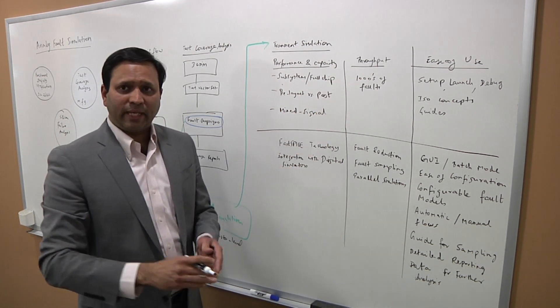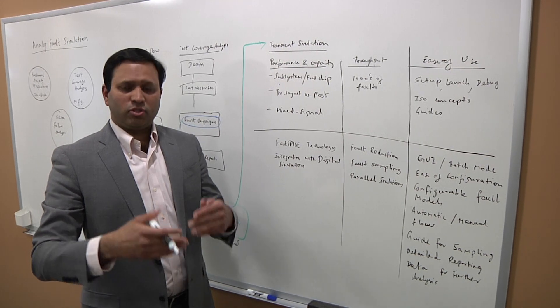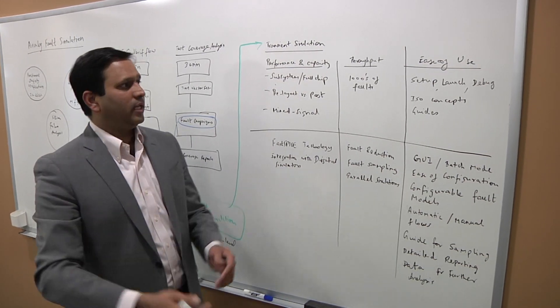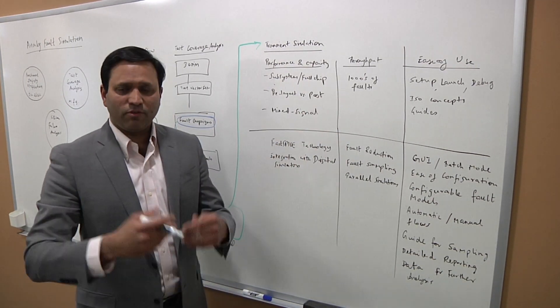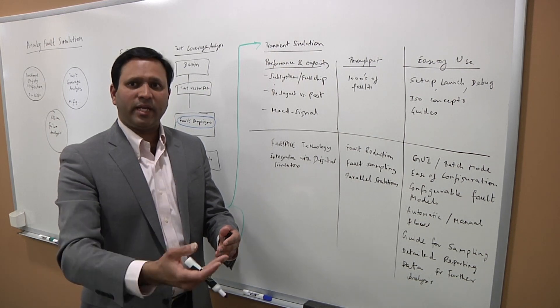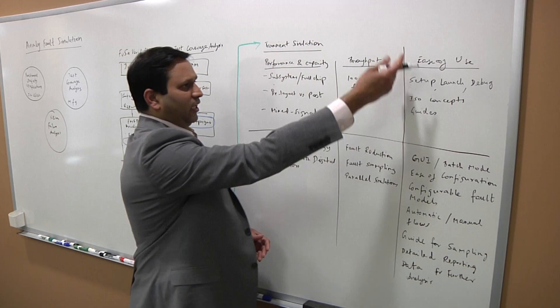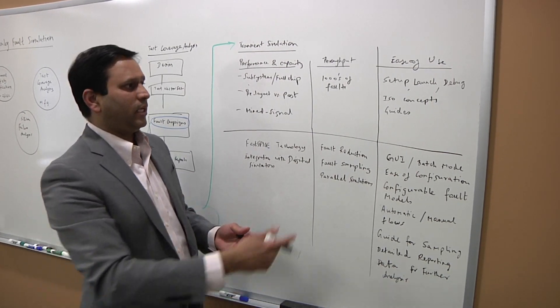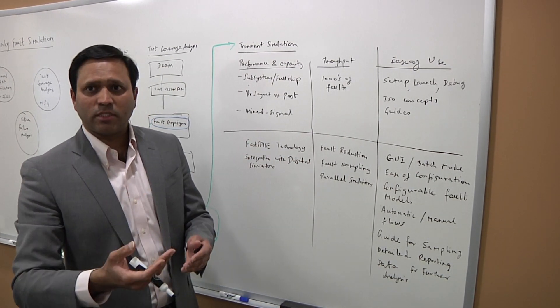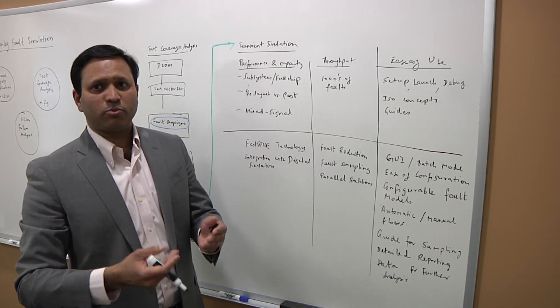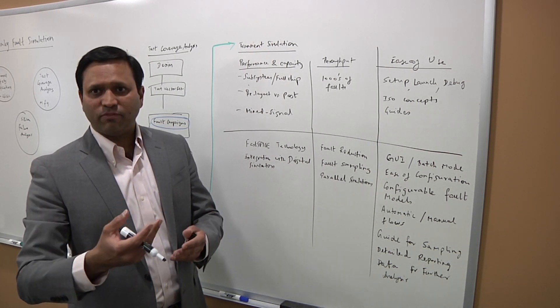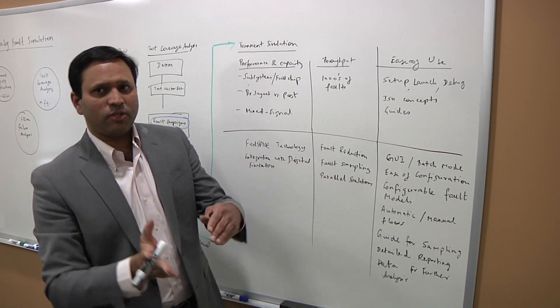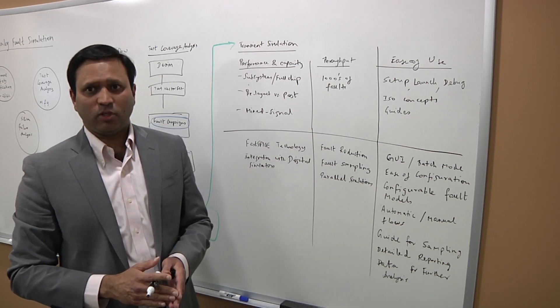So that's one set of challenges. The other one is, of course, throughput, because like I said earlier, you have to deal with thousands and thousands of faults in a large design. And so how do you get the throughput? How do you finish your fault campaigns within, say, three days or a week? And then finally, always ease of use. Set up, launch, and debug. Familiarizing yourselves with ISO concepts and having some sort of a guide from the tool, if you will, to help you navigate your way through the challenges of analog fault simulation.